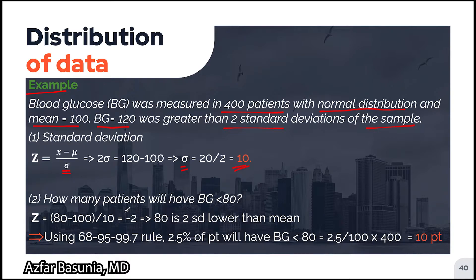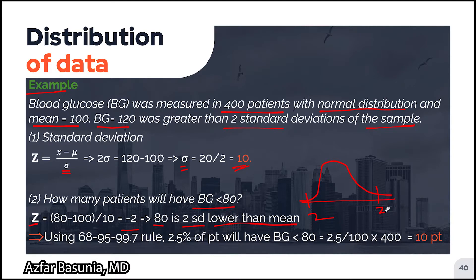The next question asks how many patients will have blood glucose less than 80. Using the z-score formula with x = 80, mu = 100, and sigma = 10, we get z = −2. This means 80 is two standard deviations lower than the mean. Using the 68-95-99.7% rule, 95% of the data lies within two standard deviations, so 5% lies outside — meaning 2.5% lies in each tail. Thus, 2.5% of patients will have blood glucose less than 80. 2.5% of 400 equals 10 patients.